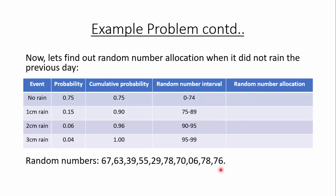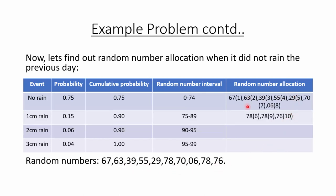Checking the random numbers against these intervals: the first random number 67 falls between 0 to 74, indicating no rain. The second random number 63 also falls between 0 to 74, indicating no rain. The third random number 39 also falls between 0 to 74, indicating no rain. We similarly find the random number allocations for all remaining random numbers.